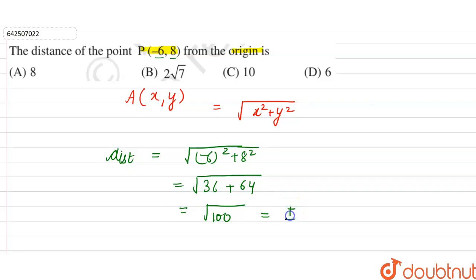And under root 100 means plus minus 10, right, plus minus 10. And as distance cannot be negative, so distance of point P from the origin will be equal to 10 units. Right, it's equal to 10 units.